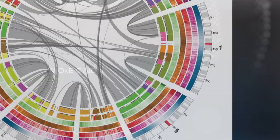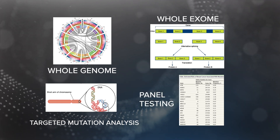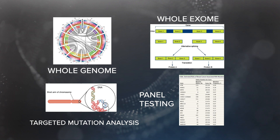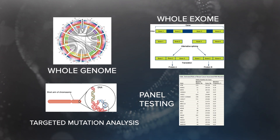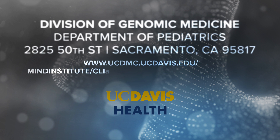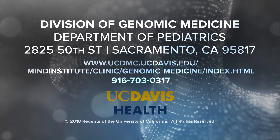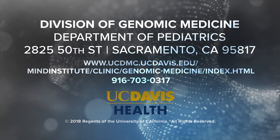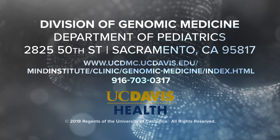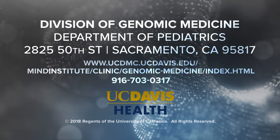So to recap, there are four main test types available for DNA analysis at the level of the nucleotide: whole genome sequencing, whole exome sequencing, targeted mutation analysis, and panel testing. If you would ever like help deciding which is the most appropriate genetic test to order for your patient, the Division of Genomic Medicine is here to help. Our clinic is located in the MIND Institute on the Medical Campus in Sacramento. You can refer patients to our Genomic Medicine Clinic, visit our website, or call us with questions or to speak with a genetic counselor.